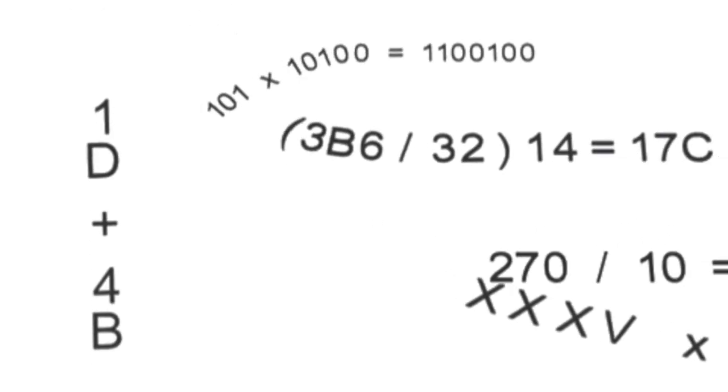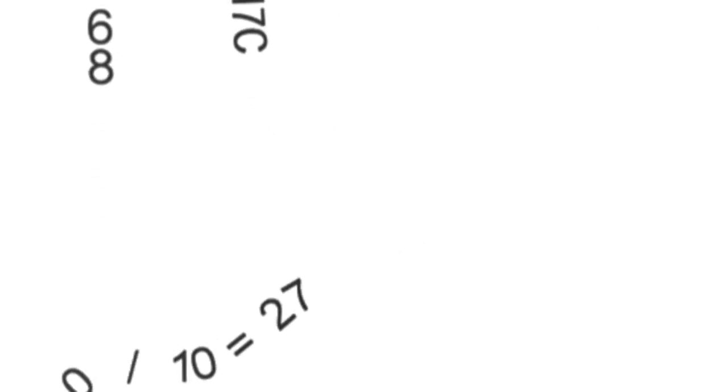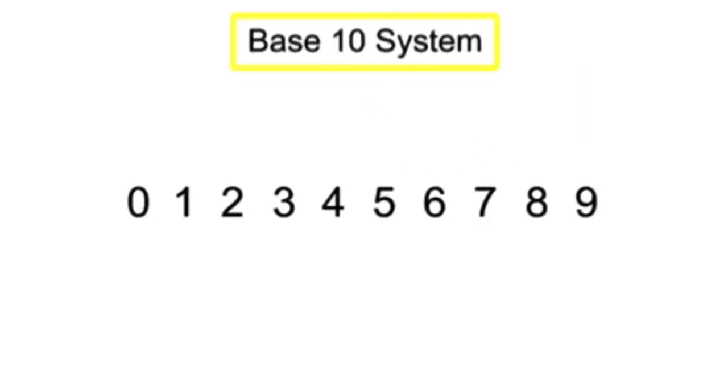Various numbering systems use symbols to refer to a number of items. Our common decimal system uses 10 numeric symbols: 0, 1, 2, 3, 4, 5, 6, 7, 8, and 9, sometimes called the base 10 system.